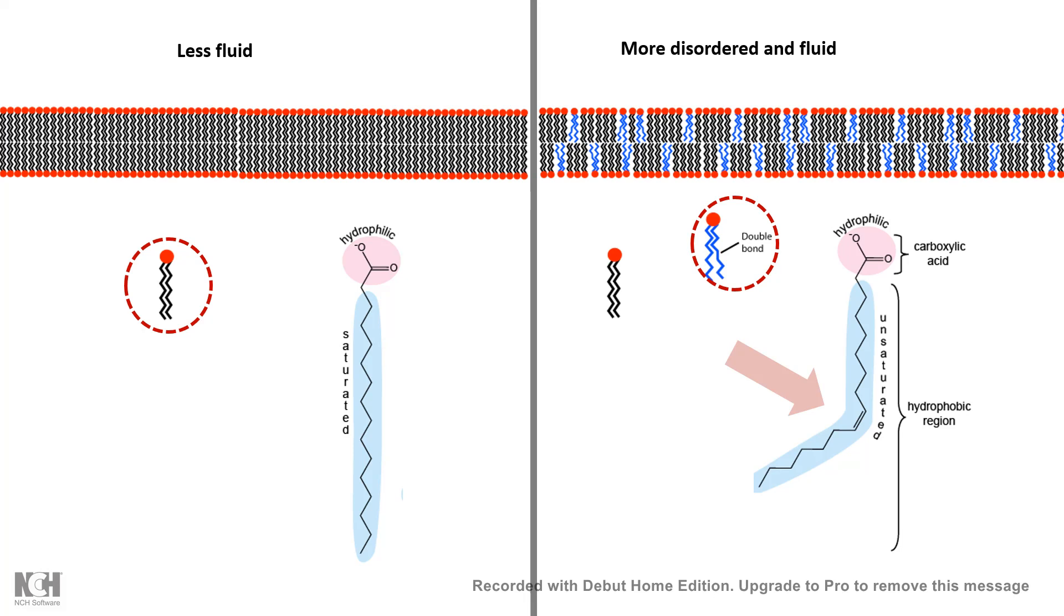Whereas a membrane which doesn't have these unsaturated phospholipids would be less fluid. So depending upon the saturation of the phospholipids itself, the membrane fluidity could be different. And membrane fluidity also depends upon temperature and tons of other factors which we would be talking in other video.